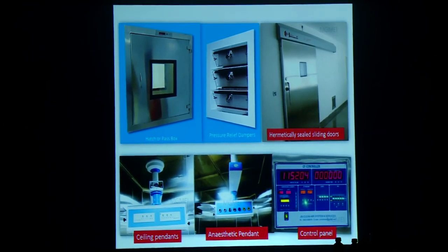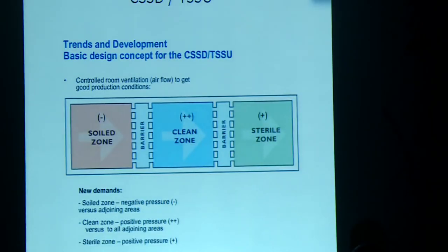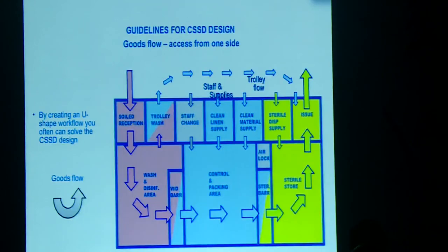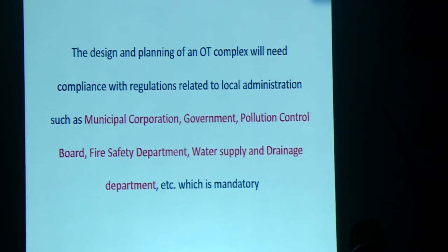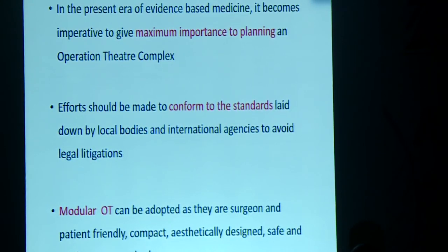The CSSD — Central Sterile Supply Department — is an important part for processing and sterilizing used instruments. It has a soil zone, clean zone, and sterile zone with differential air pressure. The flow goes from soil reception to the control and packing area, then to the sterile area, and finally to the supply part. The design and planning of an OT complex must comply with regulations relating to local administrations such as municipal corporation, government pollution control board, fire safety department, and water supply and drainage department. All these certifications must be obtained to have a well-planned OT.